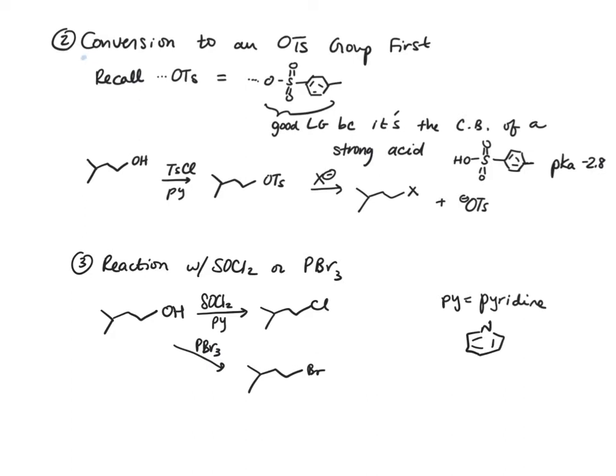Next, we have conversion of the alcohol first to a tosylate. Recall that the tosylate group has the following structure, and this is a good leaving group because it's the conjugate base of tosylic acid, which has a pKa of minus 2.8, and any time you've got the conjugate base of a strong acid, it's going to be a good leaving group.